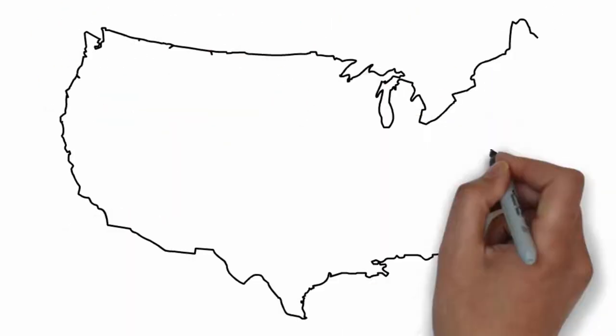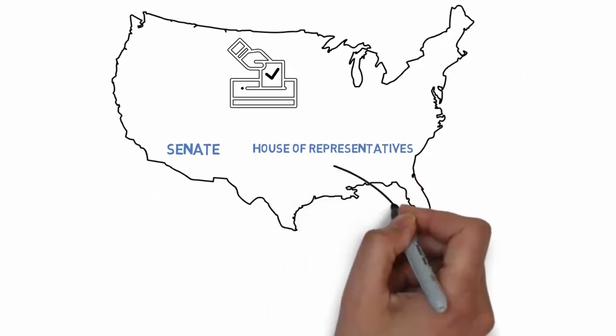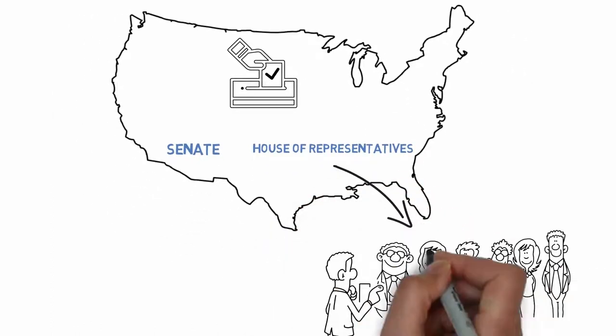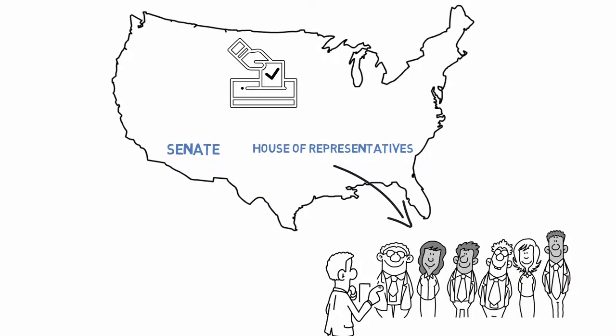In the United States, we vote to elect people to serve in the Senate and House of Representatives. The House is supposed to be the people's group. They have relatively short terms and are very close to the constituency, which are the people who elected them.